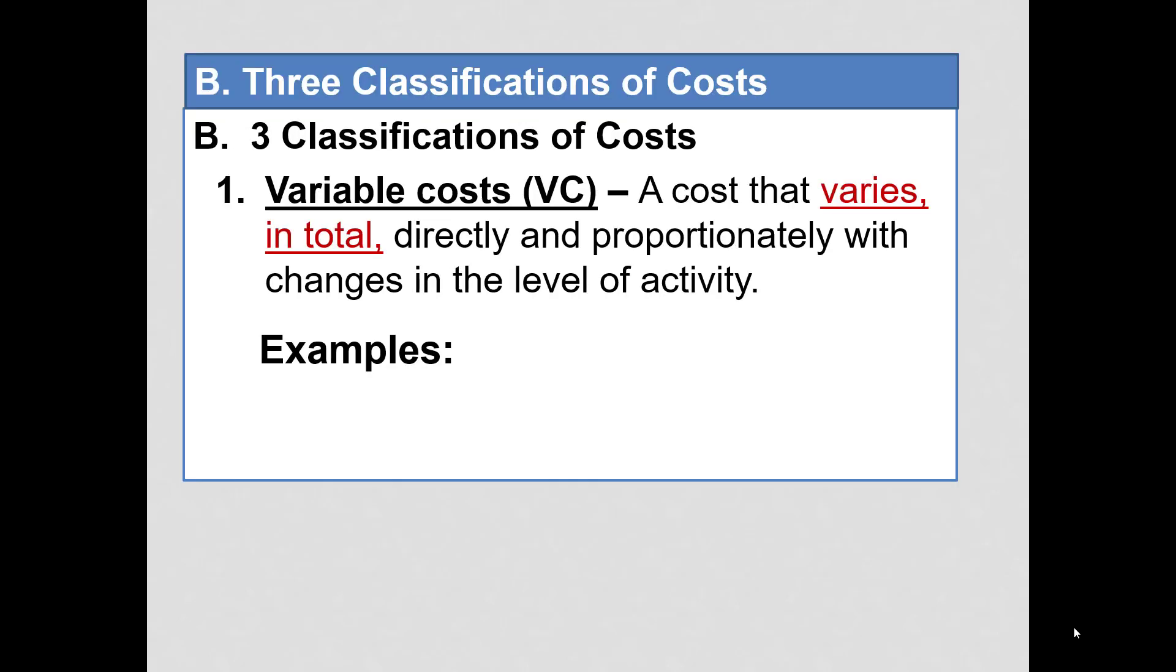We will classify costs in three ways. Variable costs, this is one that varies in total, directly and proportionally with activity. So, when we say varies in total, that of course means that the total amount will change, but directly and proportionally means if activity increases 10%, cost will increase 10%.